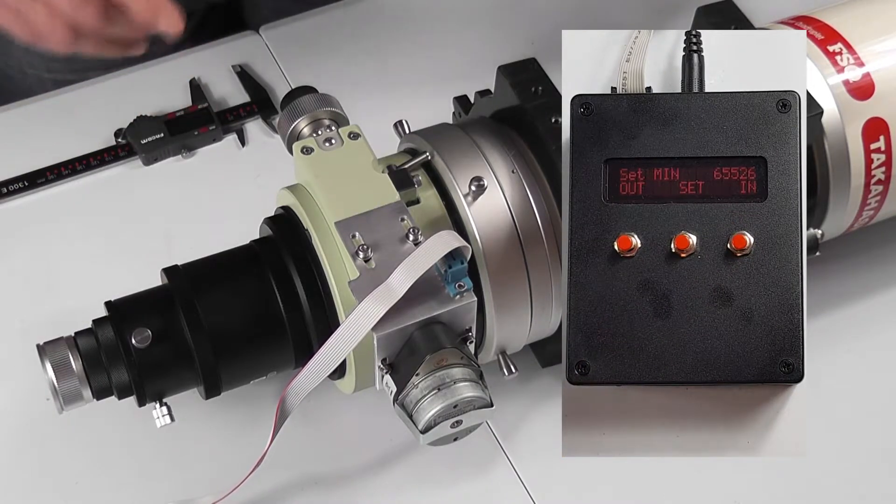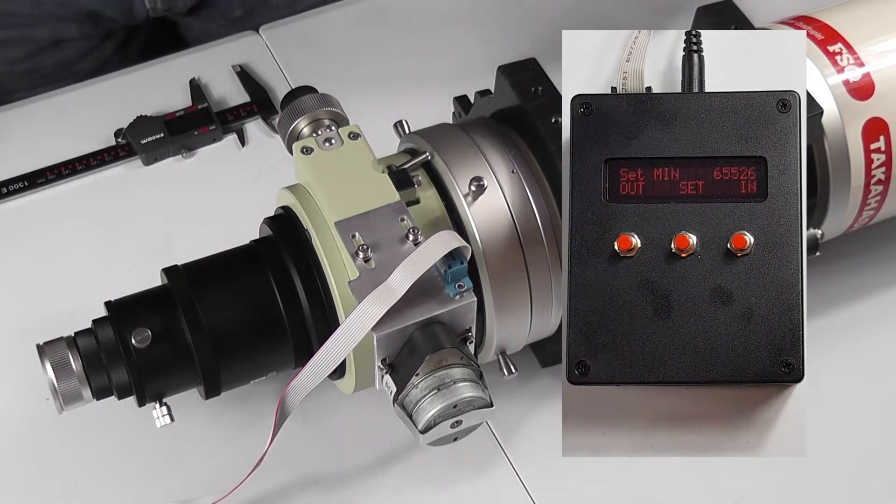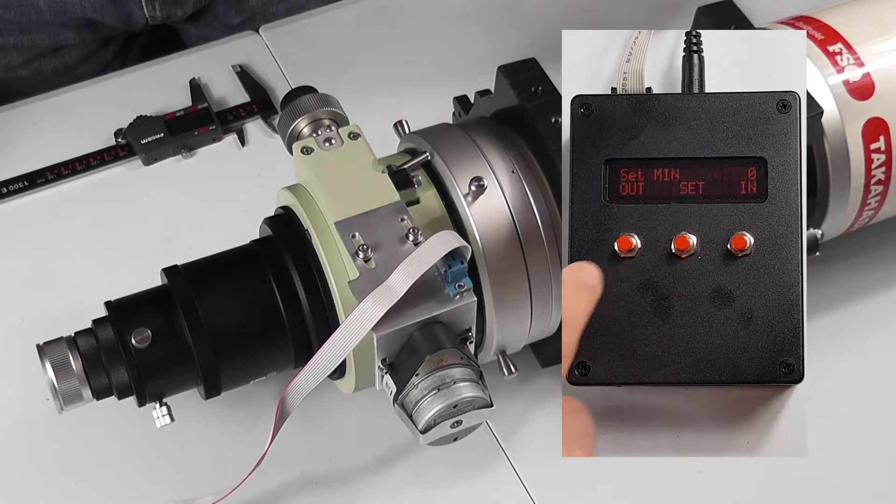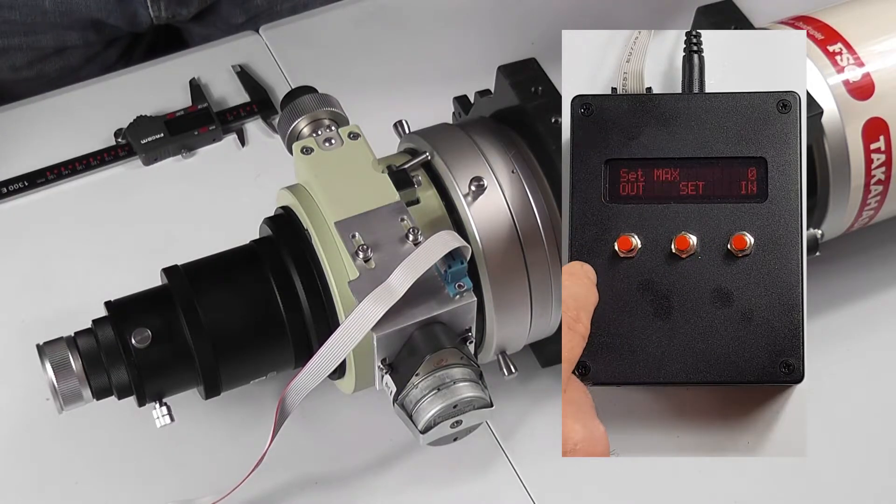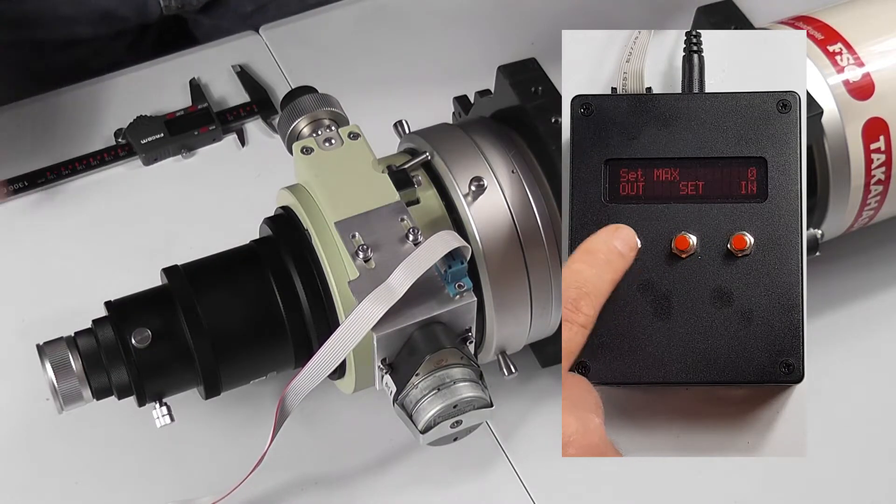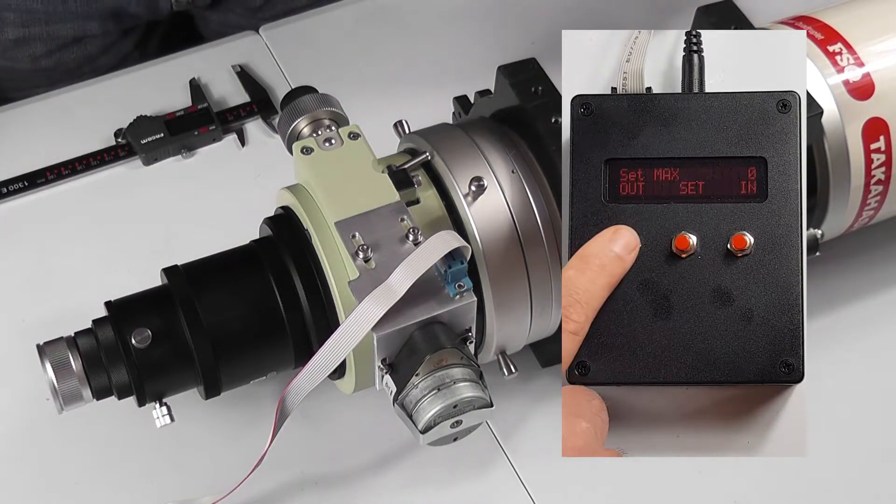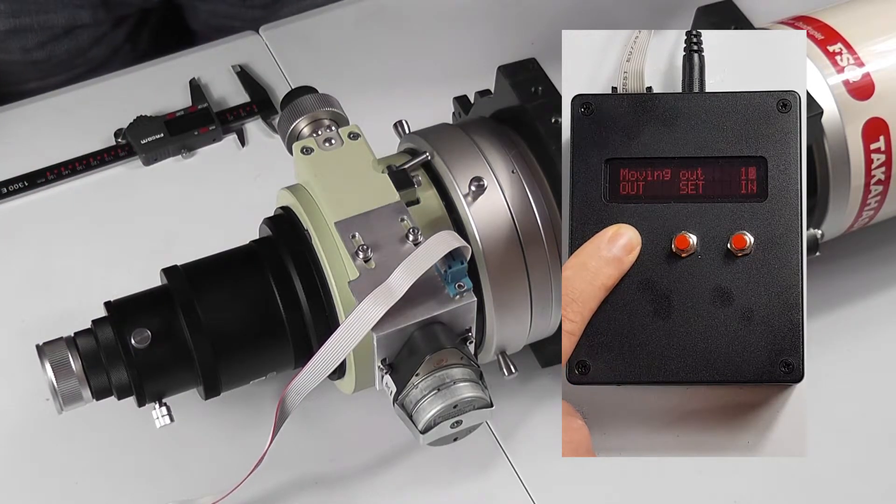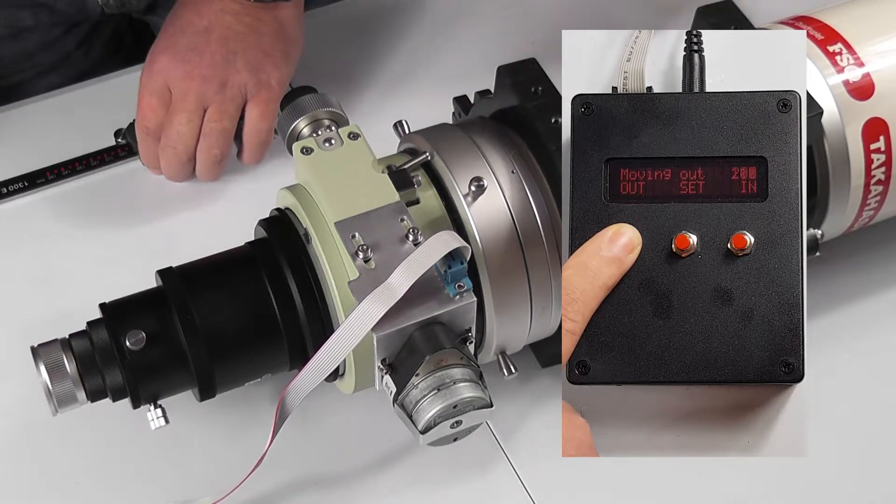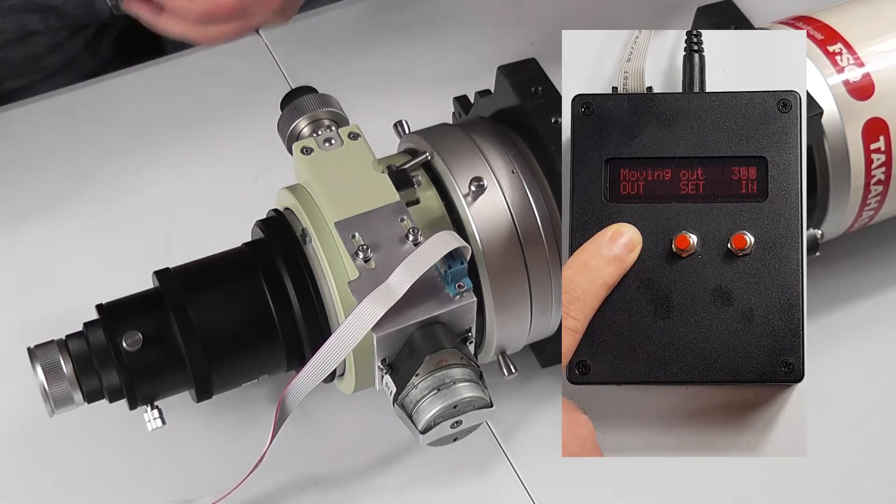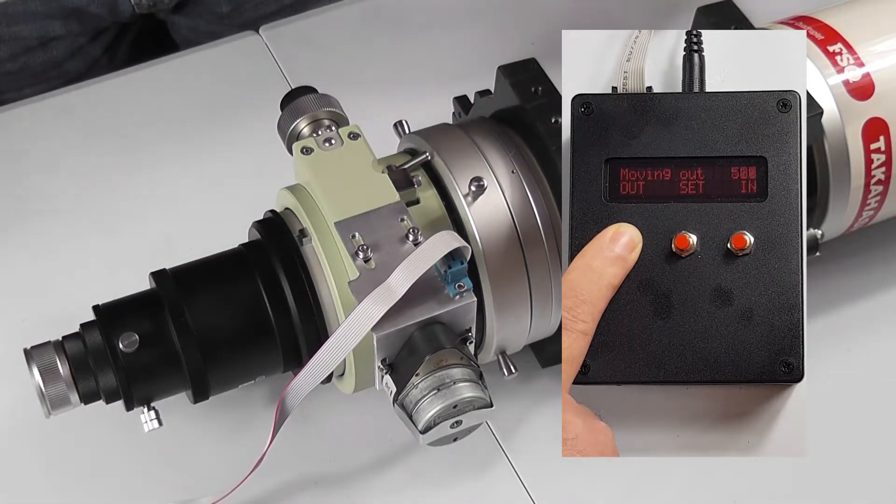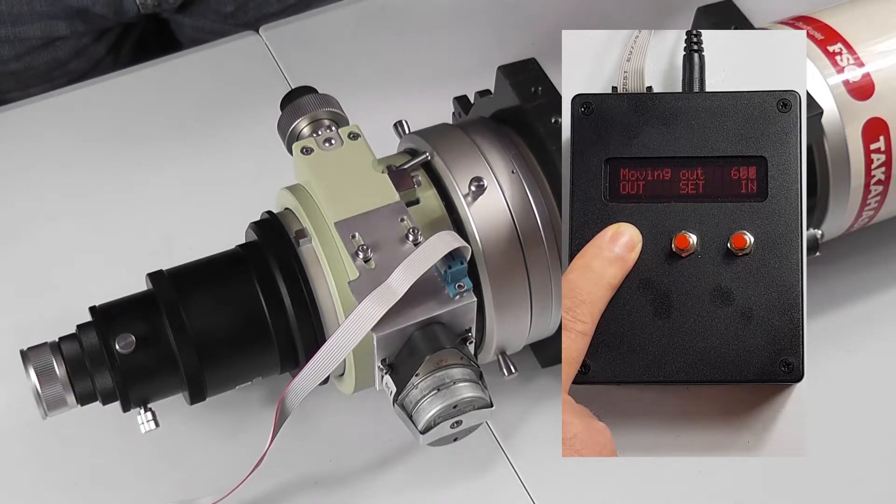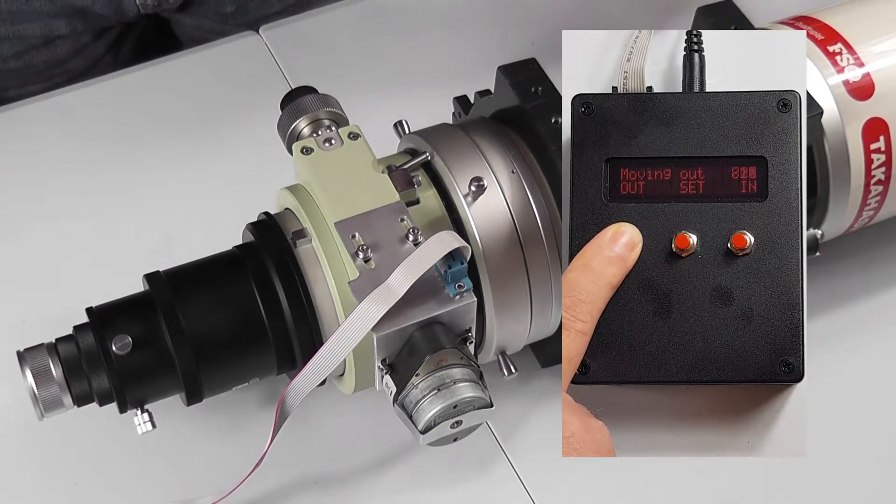So that's fine there—we're not all the way home but we're quite close. So click set. Now it changes and says set maximum. So now is the important part where we measured the focus travel previously, because this is where we're going to tell the focus controller to stop when it gets to the end of its travel.